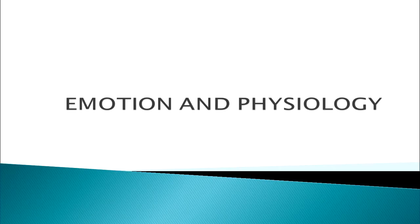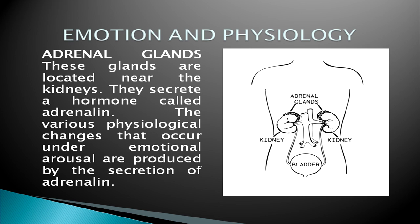Let us know the relationship between emotion and the physiology of the body. When we are under an emotional state, physiological changes are produced by the activities of all the internal organs and the nervous system. The first is the adrenal glands, located near the kidneys, which secrete the hormone adrenaline. The various physiological changes that occur under emotional arousal are produced by the secretion of adrenaline.